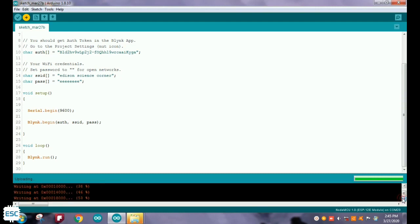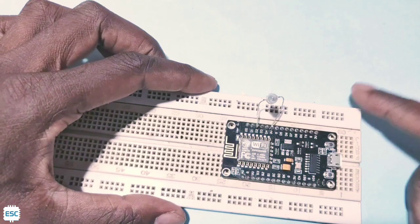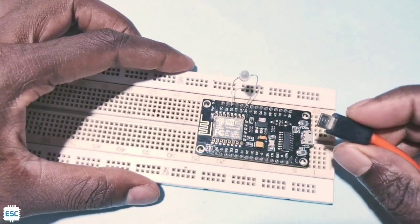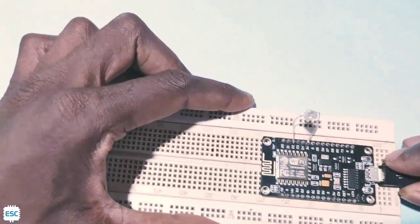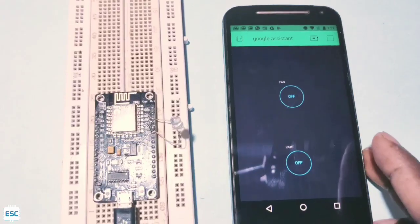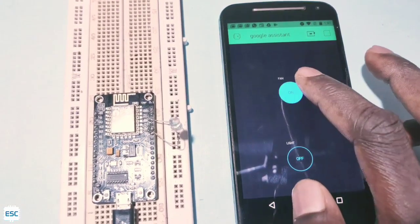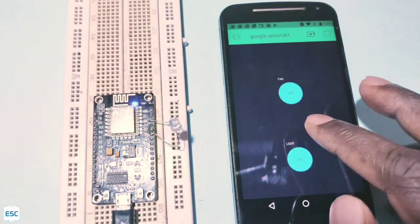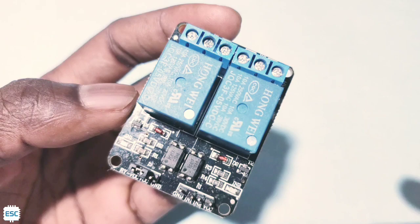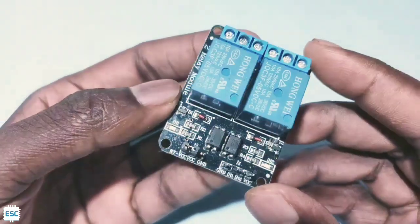Now let's power the ESP8266 and open Blynk. You can see when I press the button, the light is blinking, so it works.